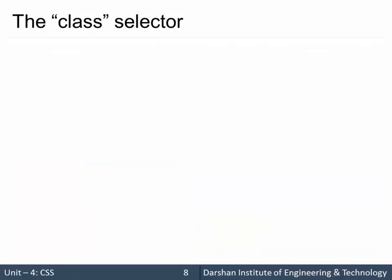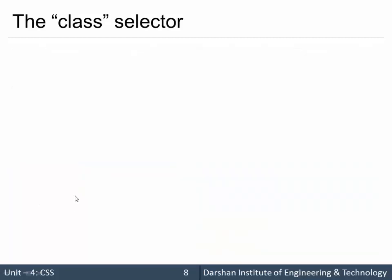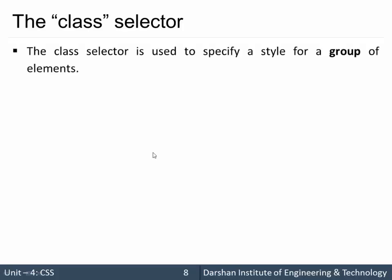Second is the class selector. For example, if I want to specify the same property to more than one element, I definitely cannot use ID in that case because ID should be single and unique — it's something like your enrollment number or roll number which is unique. For example, if I want to specify some properties to a single student I should use ID, like h1 ID equal to 101. But if you want to specify the same properties to more than one element, then we can use the class selector — it is for a group of elements.